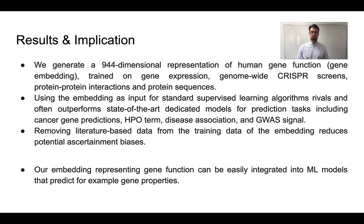Overall, we generated a representation of human gene function, trained on gene expression, genome-wide CRISPR screens, protein-protein interaction, and protein sequence data. Using these embeddings as input for standard supervised learning tasks, we could rival or outperform state-of-the-art models. Further, we have shown that removing literature-based data from the training data of the embedding reduces potential circularity biases. We hope that our embeddings representing gene function can be easily integrated into machine learning models that predict other gene properties.